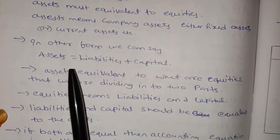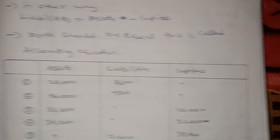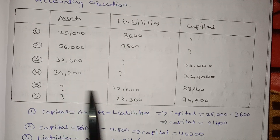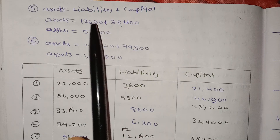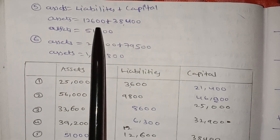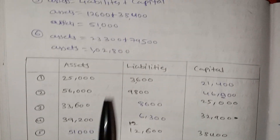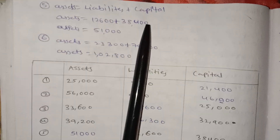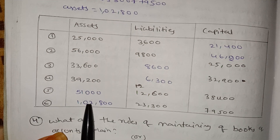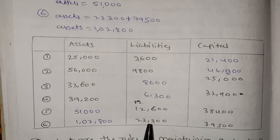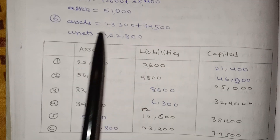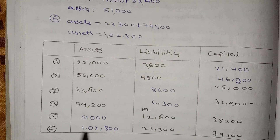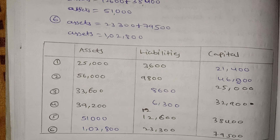Now finding assets: Assets equals Liabilities plus Capital. Here, 12,600 plus 38,400. We have to find assets. Another example: 23,300 plus 79,000 equals 1,02,300. Here we have to find the answer using this formula.